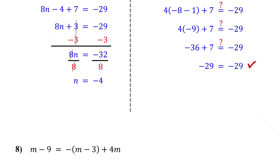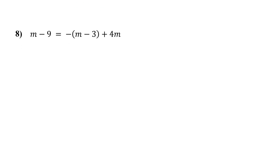Let's try a slightly more challenging one. This equation has a negative sign in front of the parentheses, and it includes variables on both sides and some like terms too. First, remove the parentheses on the right using the distributive property. Distribute the negative sign to both m and negative 3. Remember, a negative sign in front of parentheses means we are multiplying by negative 1. So negative 1 times m is negative m, and negative 1 times negative 3 is positive 3. Bring down the rest of the equation.